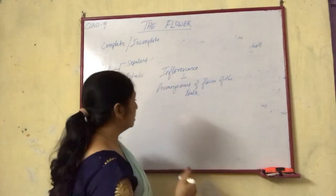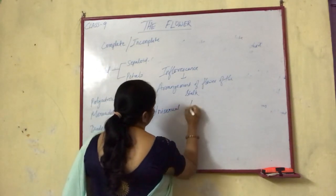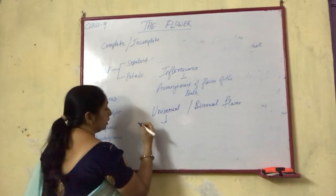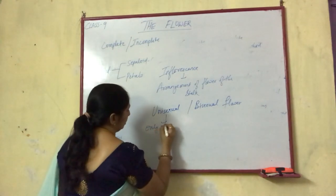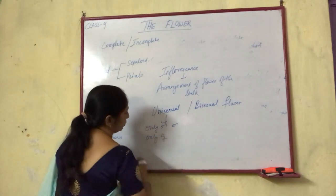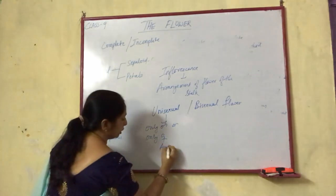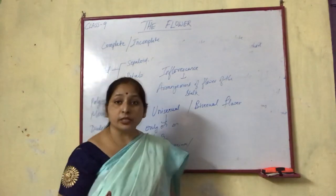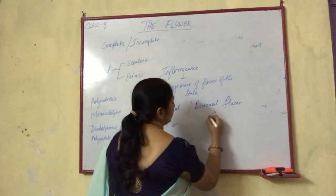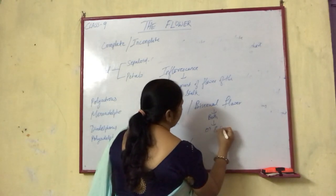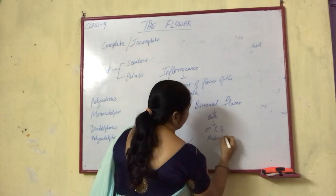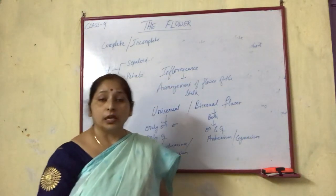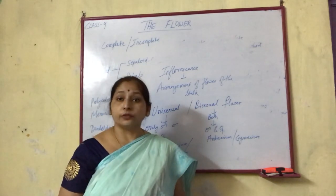One more term is unisexual and bisexual flower. If a flower contains only male or only female reproductive structures — either only androecium or only gynoecium — then the flower is a unisexual flower, either male flower or female flower. If both androecium and gynoecium are present, then it is a bisexual flower. The hibiscus we have seen is a bisexual flower.